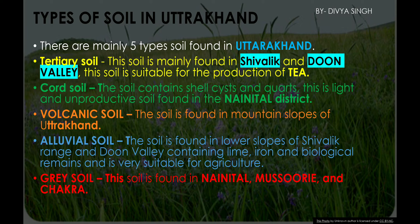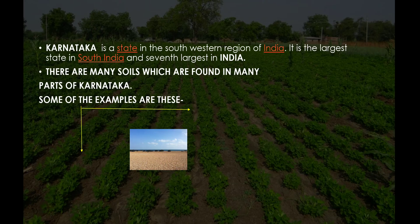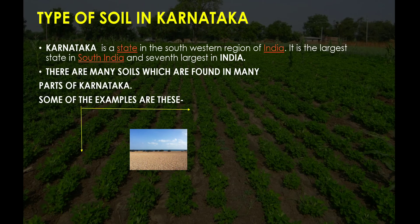Alluvial soil is the most suitable for agriculture in Uttarakhand. Fifth, gray soil, found in Nainital, Mussoorie, and Chakrata districts.